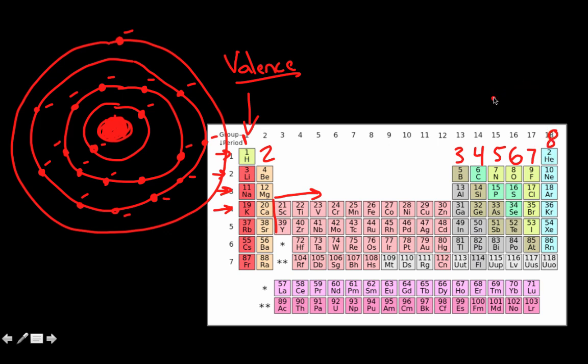So the noble gases, that's this whole group right here. And they're nonreactive. And the reason they're nonreactive, well, realize helium only has two in its outside energy level. Everything under that has eight. But all of them have their outermost energy level full.